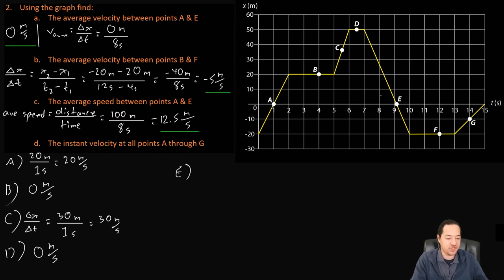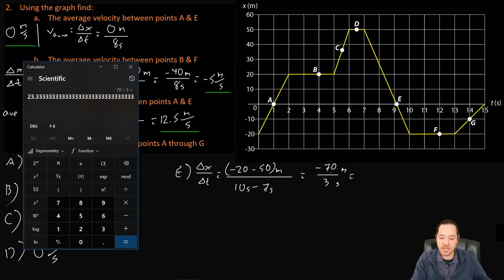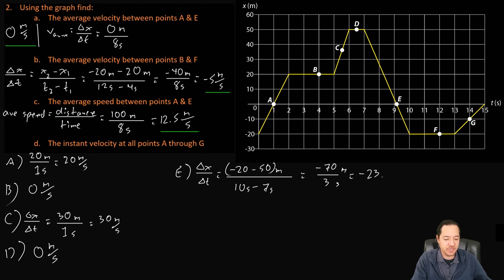At point E, we take the slope: x2 is negative 20 meters, x1 is 50 meters, so delta X is negative 70 meters. Delta T is 10 seconds minus 7 seconds, which is 3 seconds. So negative 70 meters over 3 seconds equals approximately negative 23.3 meters per second — that is our instantaneous velocity at point E.